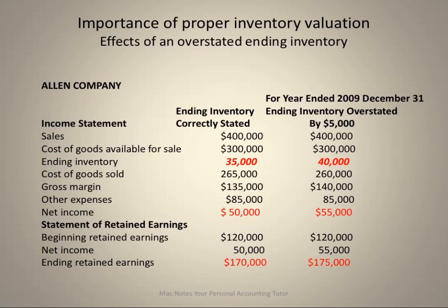Our income statement with the correct amount of inventory of $35,000 reads this way: sales, cost of goods available for sale, ending inventory, cost of goods sold of $265,000, gross margin, other expenses, and therefore net income.